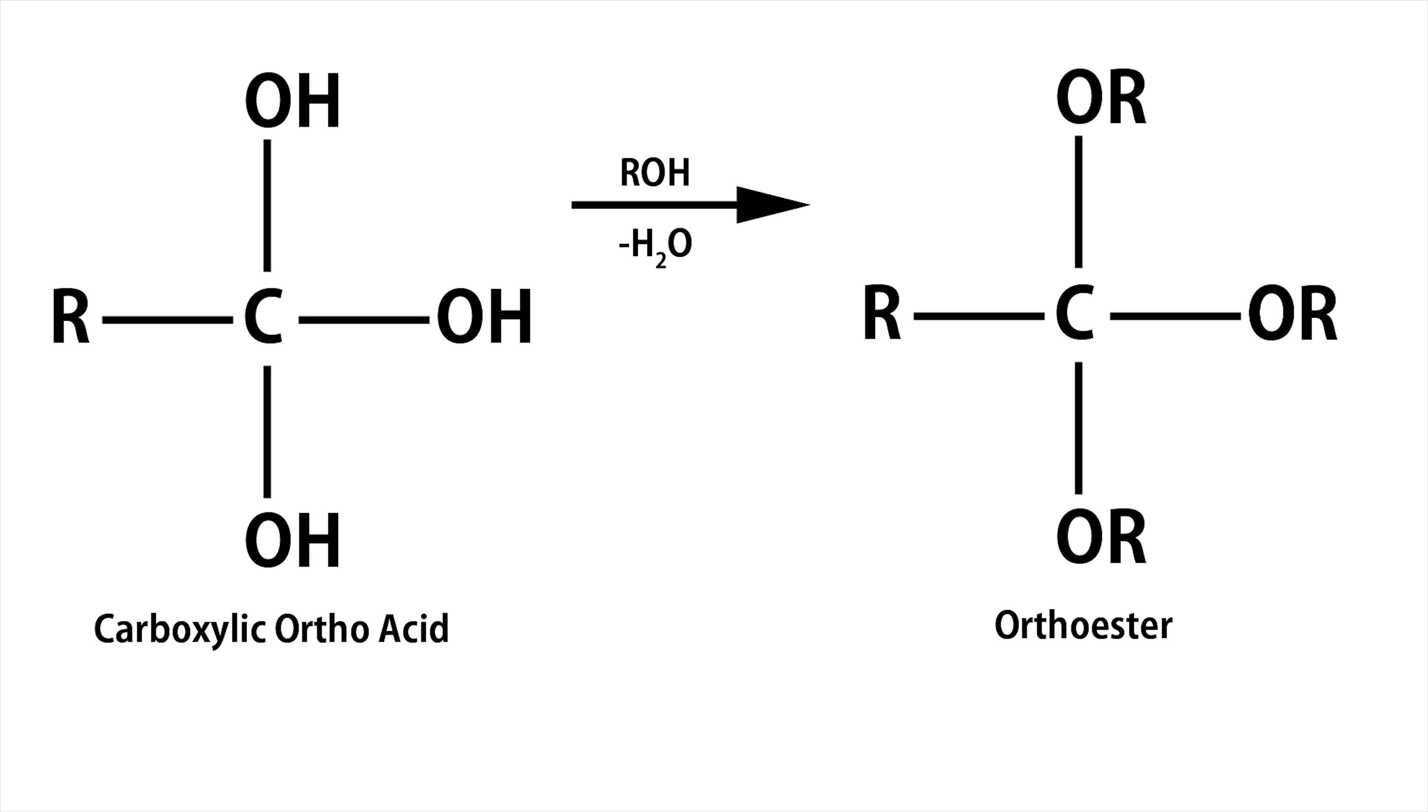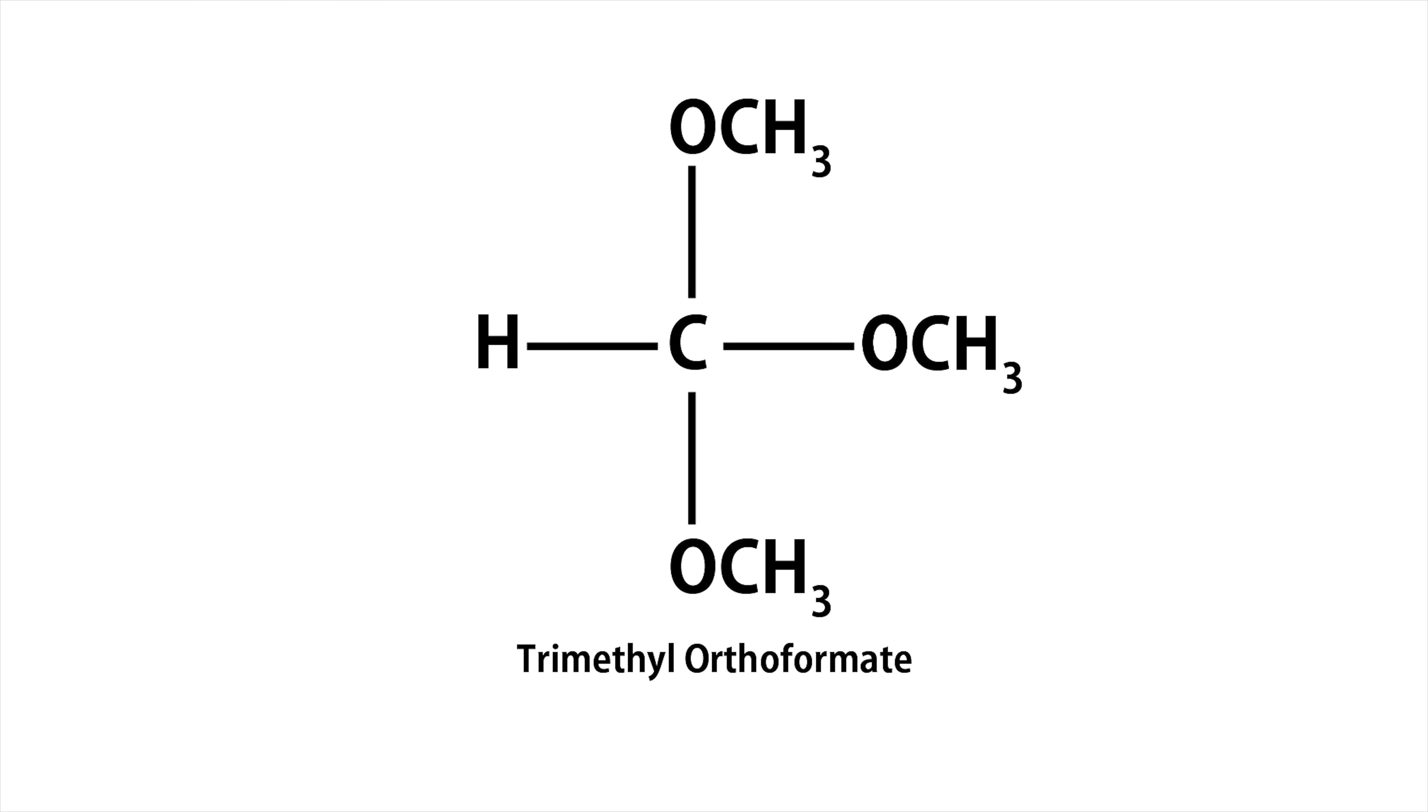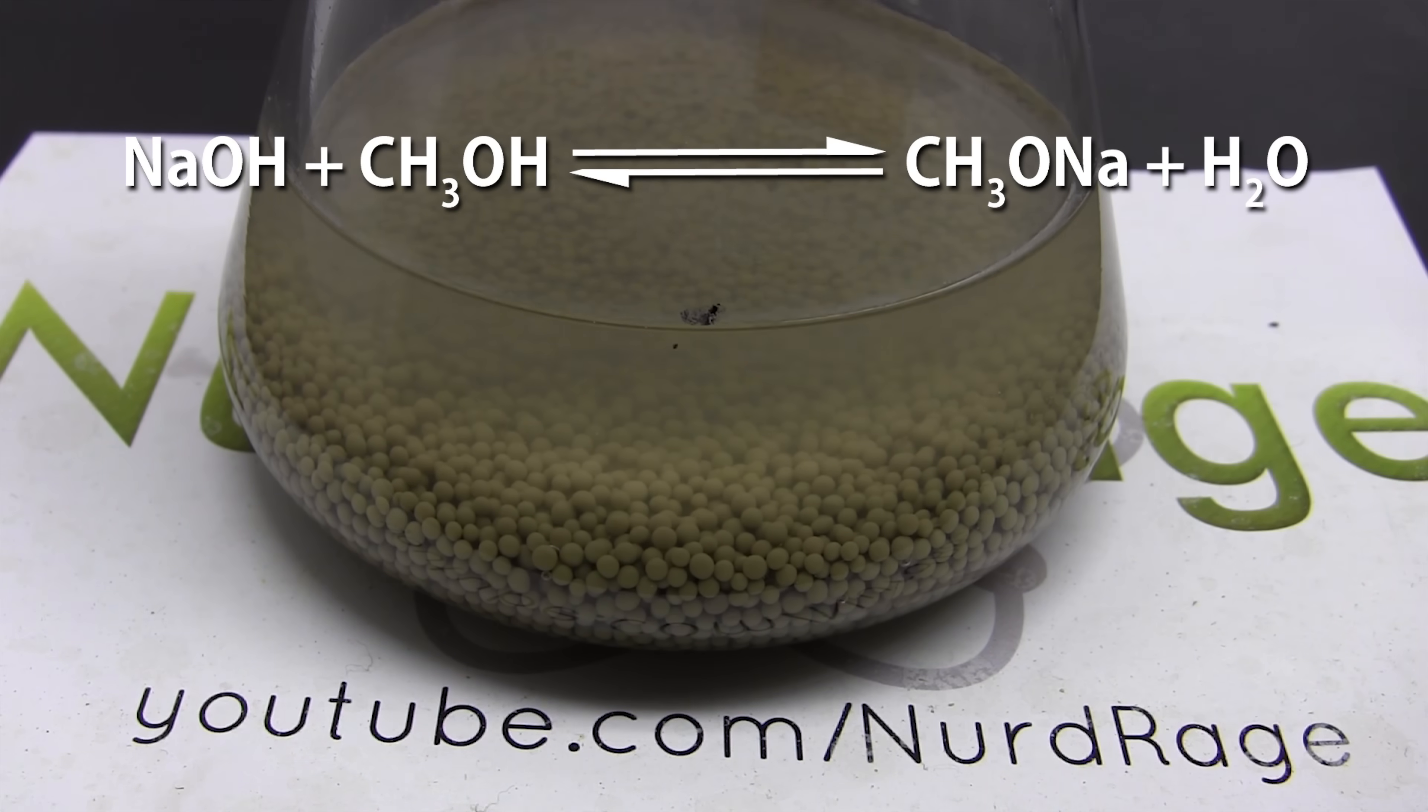Interestingly enough this stuff can be made using a roundabout procedure. In a previous video I made trimethyl orthoformate using an amateur process where I reacted sodium hydroxide with methanol and used molecular sieves to remove water and produce sodium methoxide.